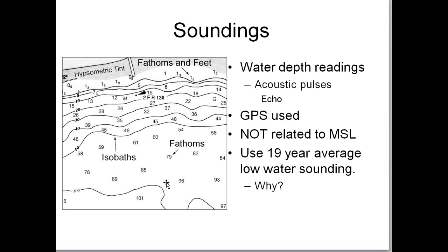When talking about ocean surfaces, the point data is called a sounding. It's based on a sonar echo pulse that bounces back, and the monitors can tell how deep it is. When you create a sounding, the depth is not based on average sea level — it's based on a 19-year average of the low water. Think about why they would use a low-water average rather than zero sea level at the shore.